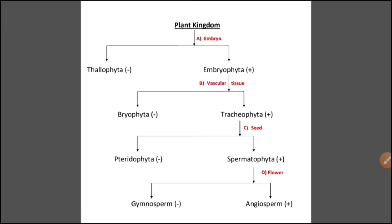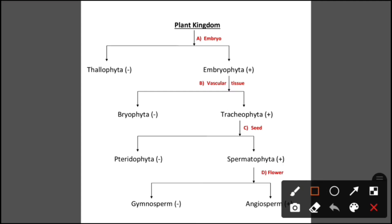So as we are going to classify the plant kingdom, we will discuss four major bases of classification: first, on the basis of presence or absence of embryo; second, on the presence or absence of vascular tissue; third, on the presence or absence of seeds; and fourth, on the presence or absence of flowers.